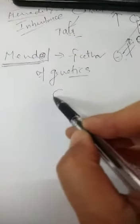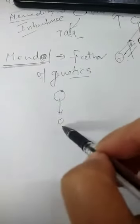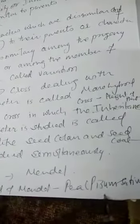But he was very much curious to know how do characters transfer from one to the next generation. So Mendel has grown Pisum sativum. This is the pea plant. Here also they have shown the pea plants.